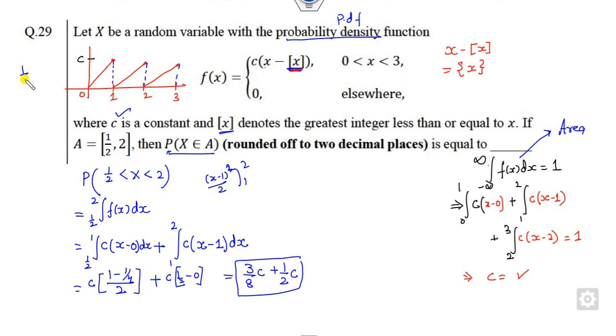This is a right triangle, so what is the area? Half base 1, height is C. So the area of this portion is C by 2. Similarly, the base is 1, height is C, height is C and so on.